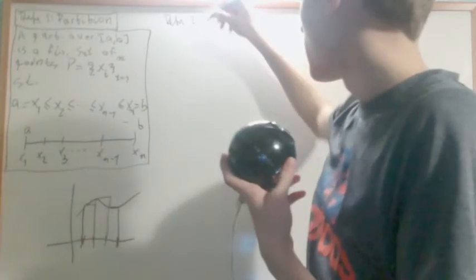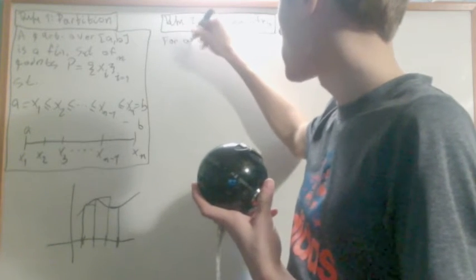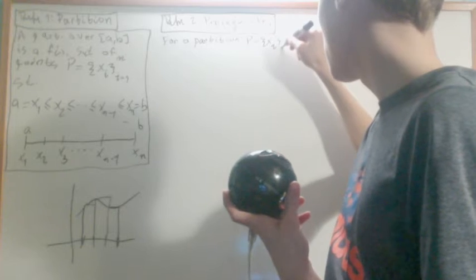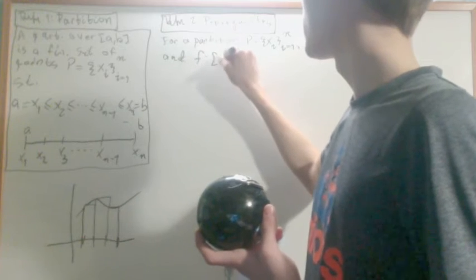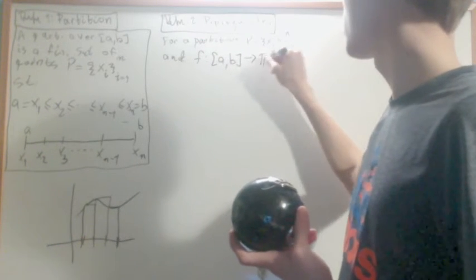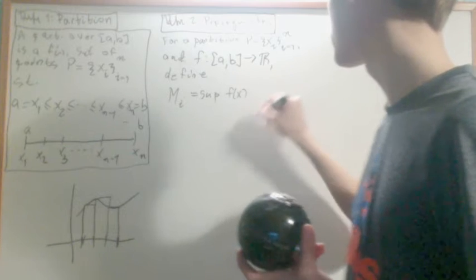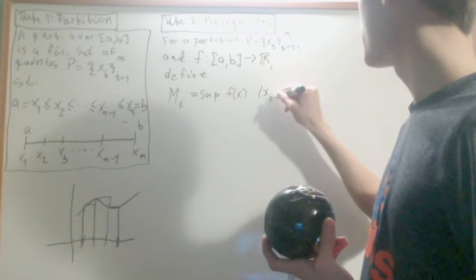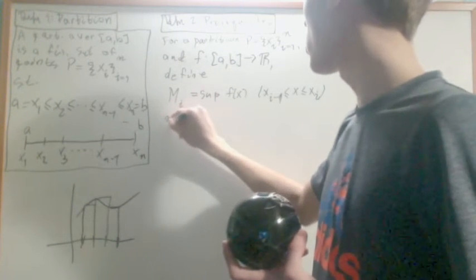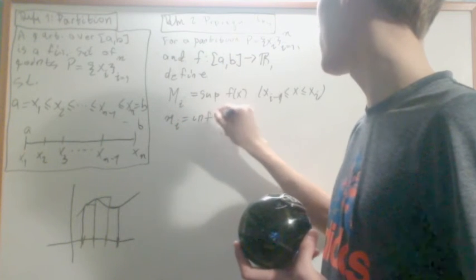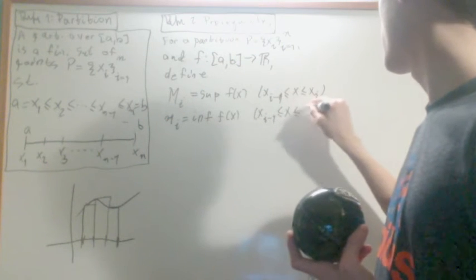Definition two, prerequisites. Things we need beforehand. For a partition p, which is going to be xi from i equals 1 to n, and f from a to b into r, define uppercase Mi to be the supremum of f of x for x between xi minus 1 and xi. And say that lowercase mi is going to be the infimum of f of x for x between xi minus 1 and xi.